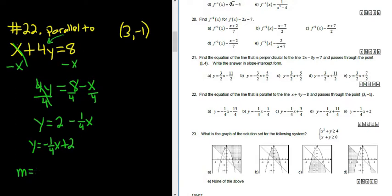So m here is equal to negative 1 fourth. Because our line is parallel to this line, the slope of our line is the same as the slope of this line. Parallel lines have the same slope.